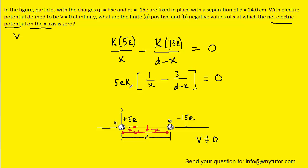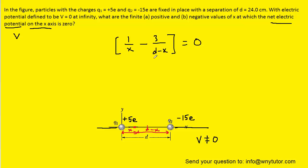Now 5ek is a constant, so if we divide both sides of the equation by that constant, it's going to effectively cancel away. And then our goal will be to solve for x. So why don't we add the 3 over d minus x to the right hand side. We could then cross multiply. We'll add x over to the left hand side to give us 4x, and then divide both sides by 4. And then we could substitute in the value of d, which was given to us as 24 centimeters. And then we can see after dividing by 4 that the correct answer to part A will be 6 centimeters. So as long as x is equal to 6 centimeters, then the total electric potential at that point will be 0 volts.